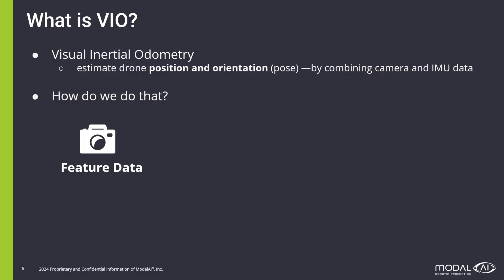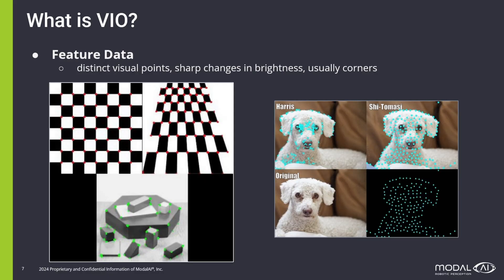So what is feature data? Feature data is distinct visual points within an image, usually corners or areas with sharp changes in brightness. On the left image, the red dots on the corners of the chessboard are identified as features, and on the right image, the blue dots on the dog have been identified as feature points.